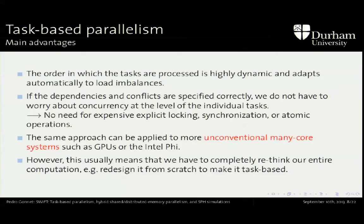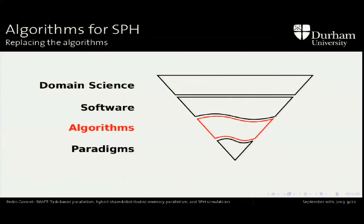A further advantage is that this can be used for GPUs or accelerators such as the Intel Phi — this is probably worth a talk on its own. Aidan has a poster, so take a look if you're interested in doing this on GPUs. However, there's no free lunch. We have to completely rethink our computation. This is not something like OpenMP you just slap onto your existing code. You have to take your algorithms apart, figure out exactly what you're doing, and then put them back together as tasks — and that's not trivial. It's actually very cache-friendly because it forces you to keep the data and computations contiguous, so there is good cache performance.